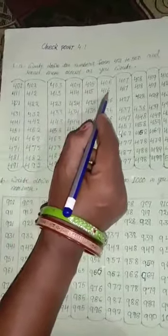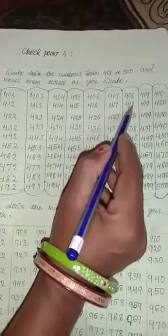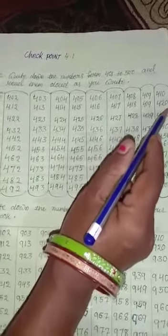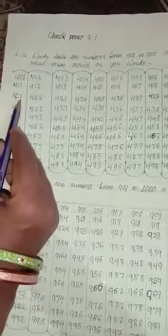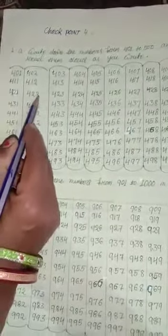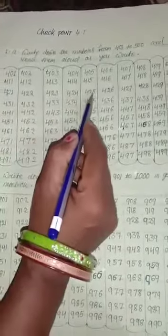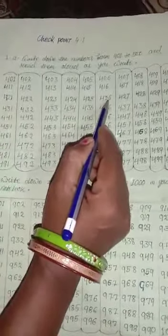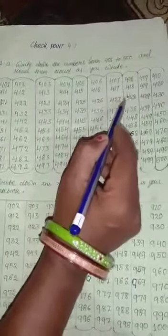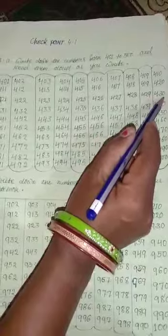416, 417, 418, 419, 420, 421, 422, 423, 424, 425, 426, 427, 428, 429, 430.